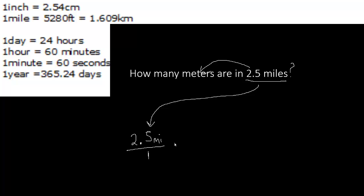We multiply our division problem by another division problem. You always want to start by making sure that miles cancels out — in order to cancel miles, put it on the bottom of the next step. Now look at your conversion chart: there is 1.609 kilometers in one mile. So once we cancel out miles we're going to be left with kilometers — and that's not what we want. That's why we use the factor label method and keep going.